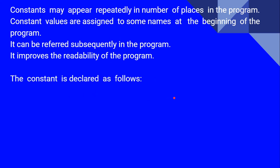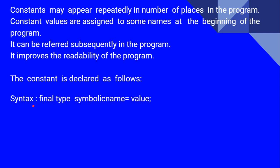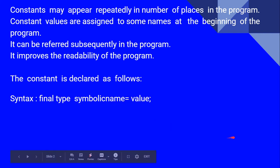So how do we declare a constant? The syntax is: the keyword final, followed by the type of the constant — which may be integer, numeric, character, or string — and then the symbolic name, which is any user-defined name, followed by an equals sign and the value.